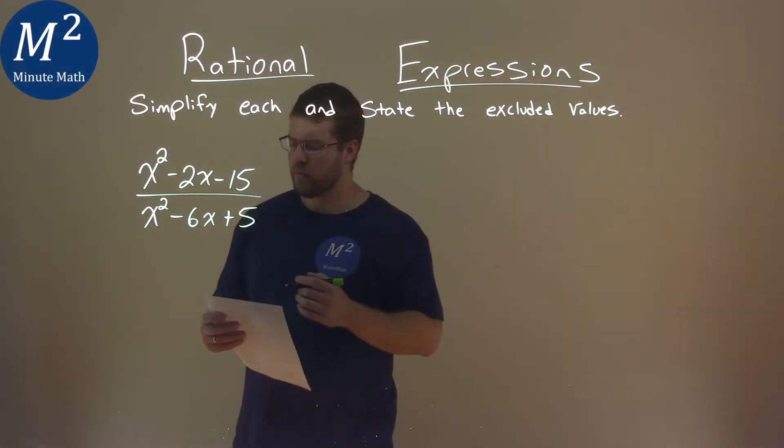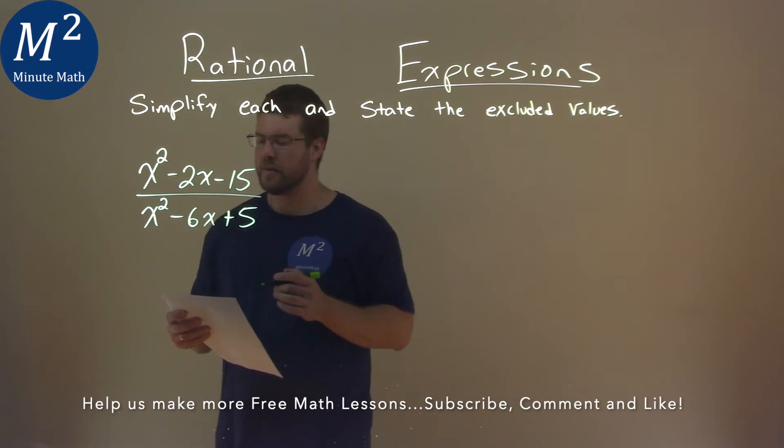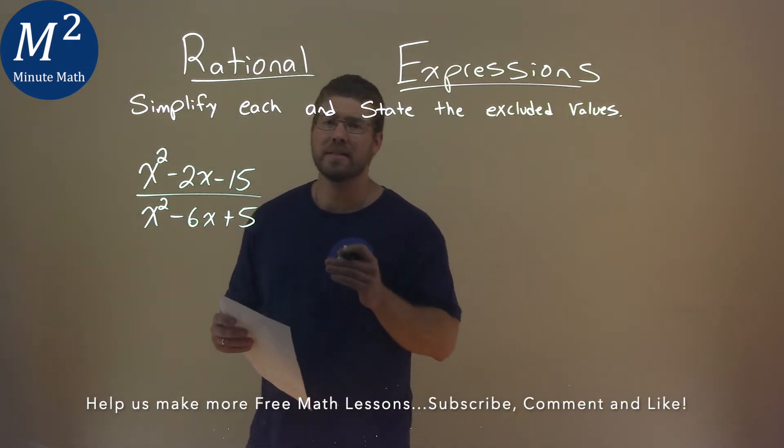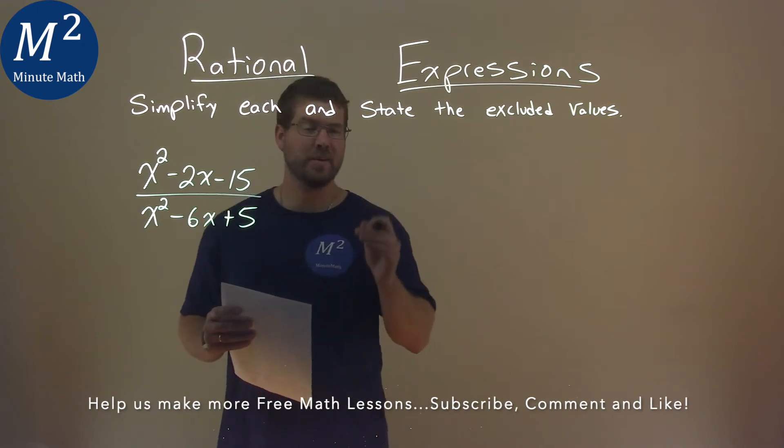We're given this problem right here: x squared minus 2x minus 15 over x squared minus 6x plus 5, and we need to simplify this and state the excluded values.